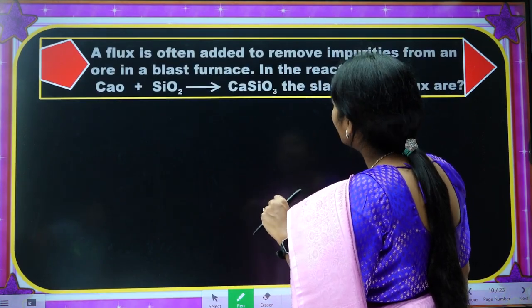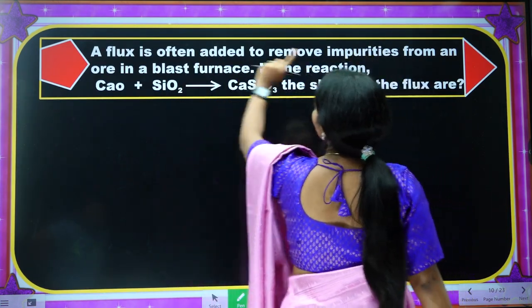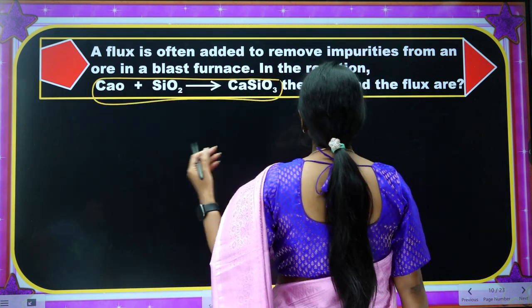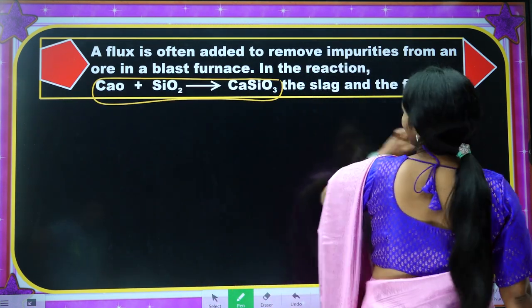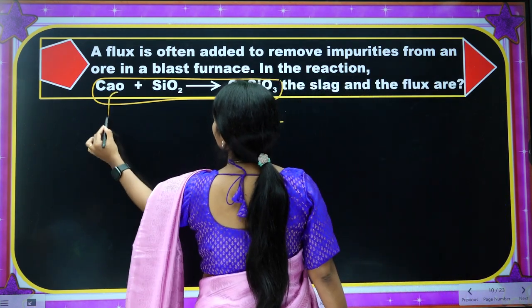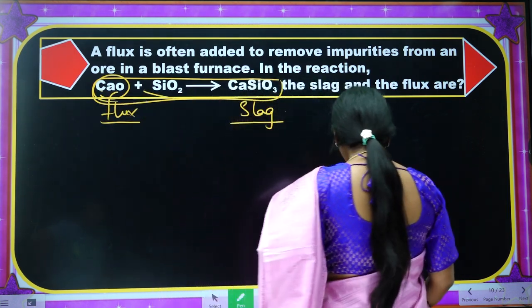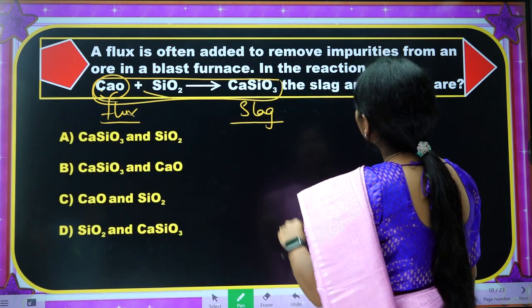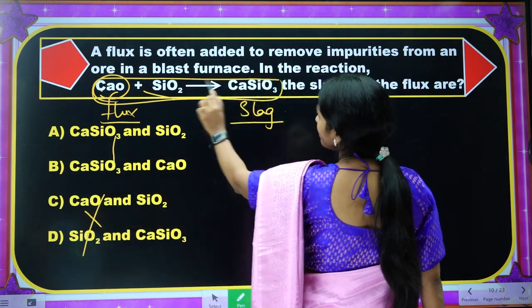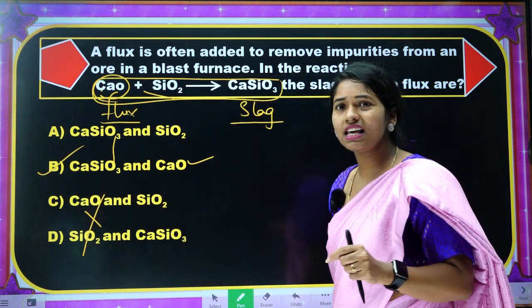Next question: Flux is often added to remove impurities from ore in a blast furnace. What is the slag? Slag is calcium silicate (CaSiO₃). What is the flux? The flux is the substance you are adding — calcium oxide (CaO). So the answer is: slag is CaSiO₃ and flux is CaO. Option B is the correct answer.